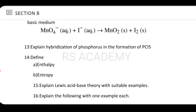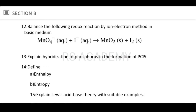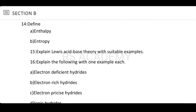Define enthalpy and entropy. Enthalpy is equal to internal energy plus the product of pressure and volume — that is, H = U + PV. Entropy is a measure of the randomness of a substance. These are straightforward definitions.